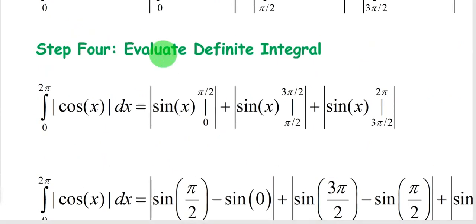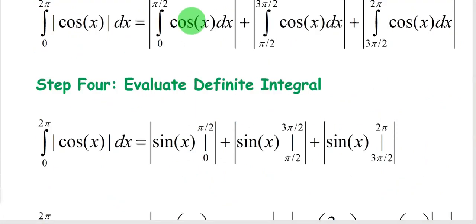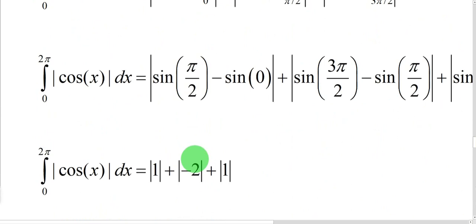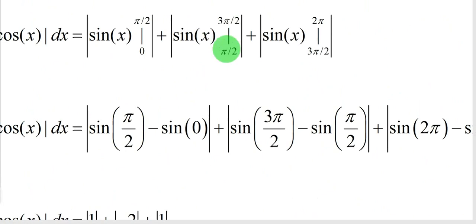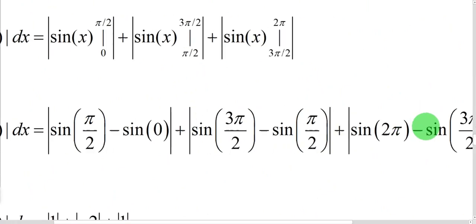And so step four is to just evaluate the definite integral. Again, you pick the antiderivative, and then you plug in your upper and lower limits. So the first one is sin(π/2) - sin(0). The second one is sin(3π/2) - sin(π/2). And the third one is sin(2π) - sin(3π/2).